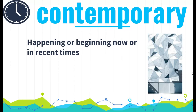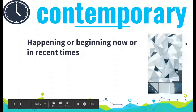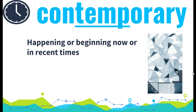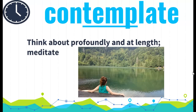Contemporary is your next word and that means happening or beginning now or in recent times. This picture here is a piece of contemporary art, which means probably modern art. It happens now — it's a newer piece and it typically reflects what is happening in the world at that time.